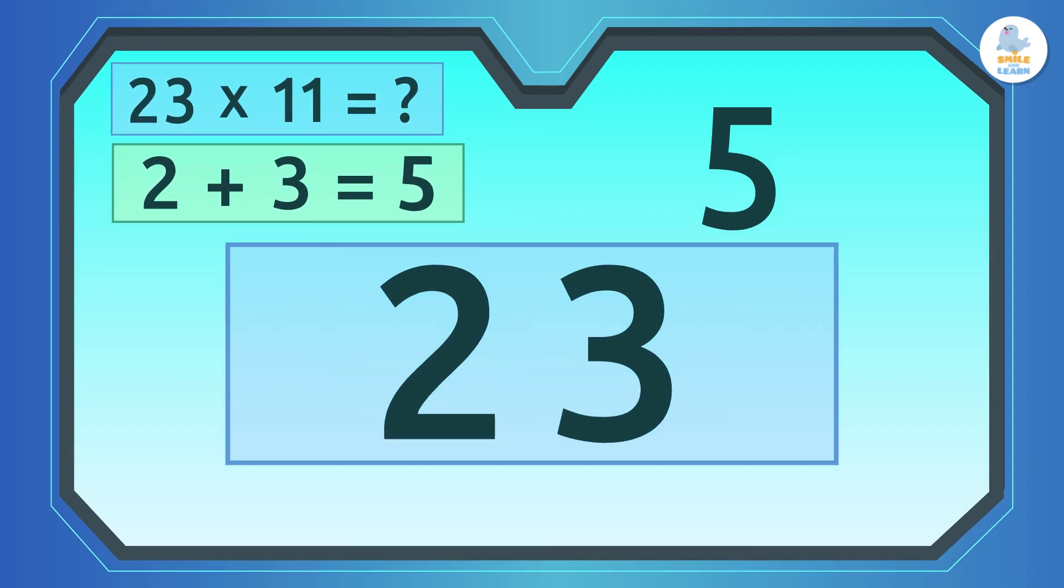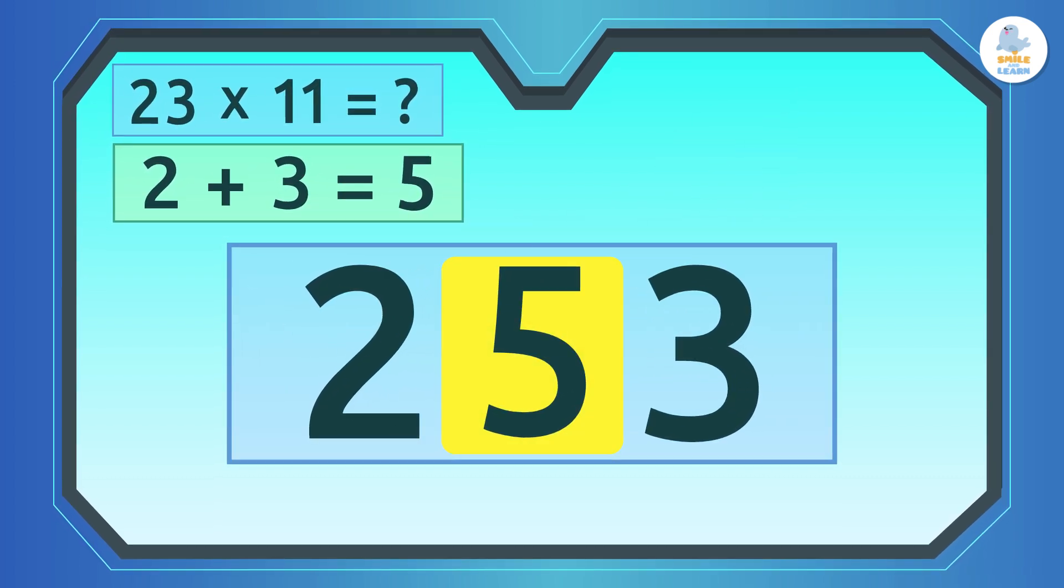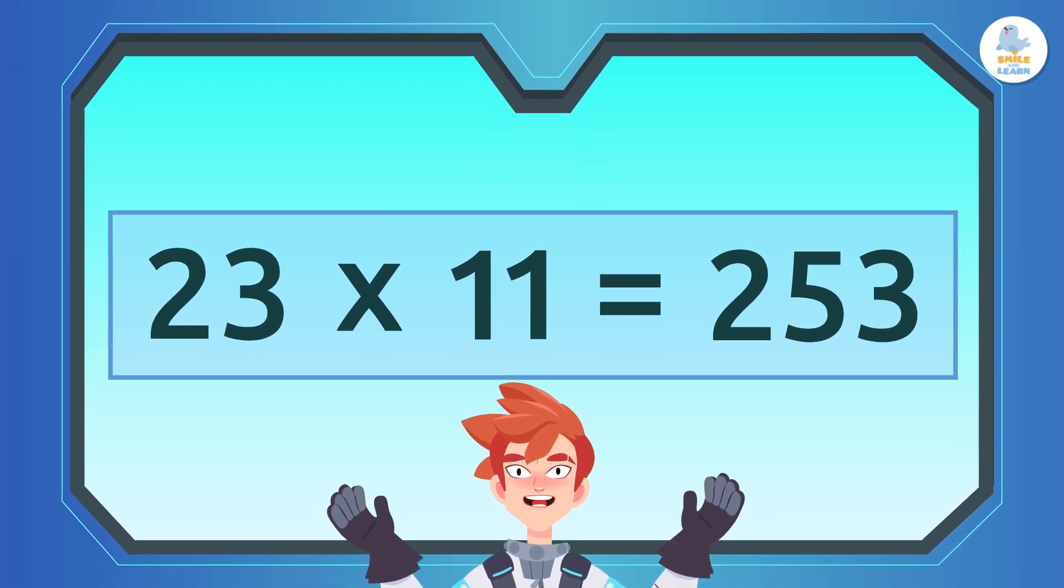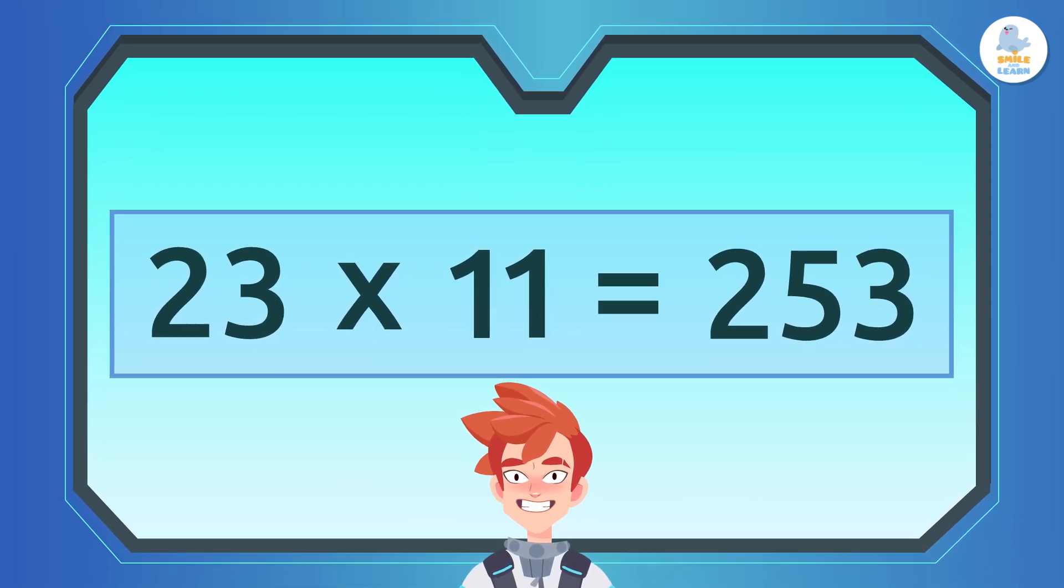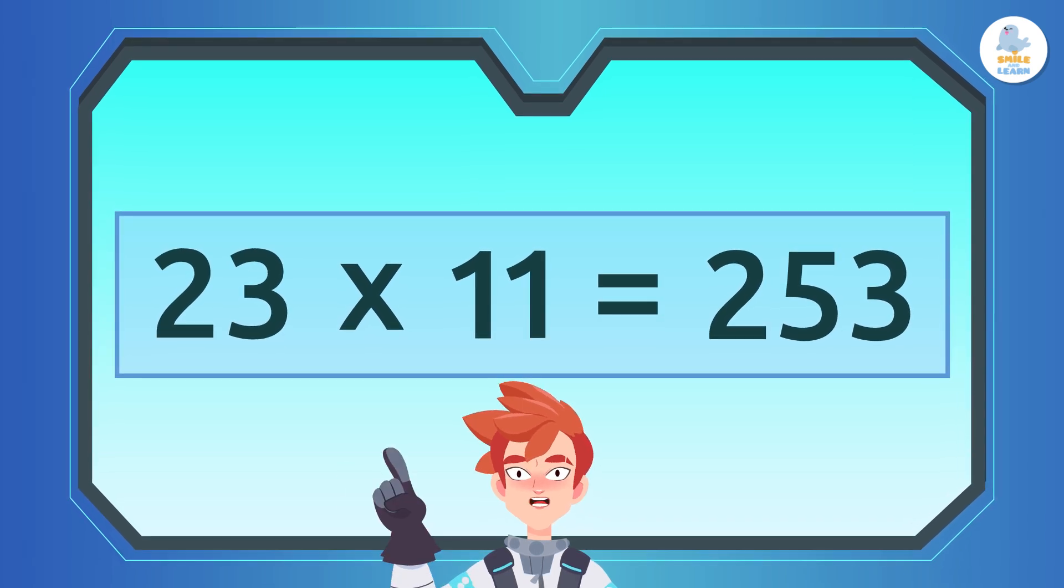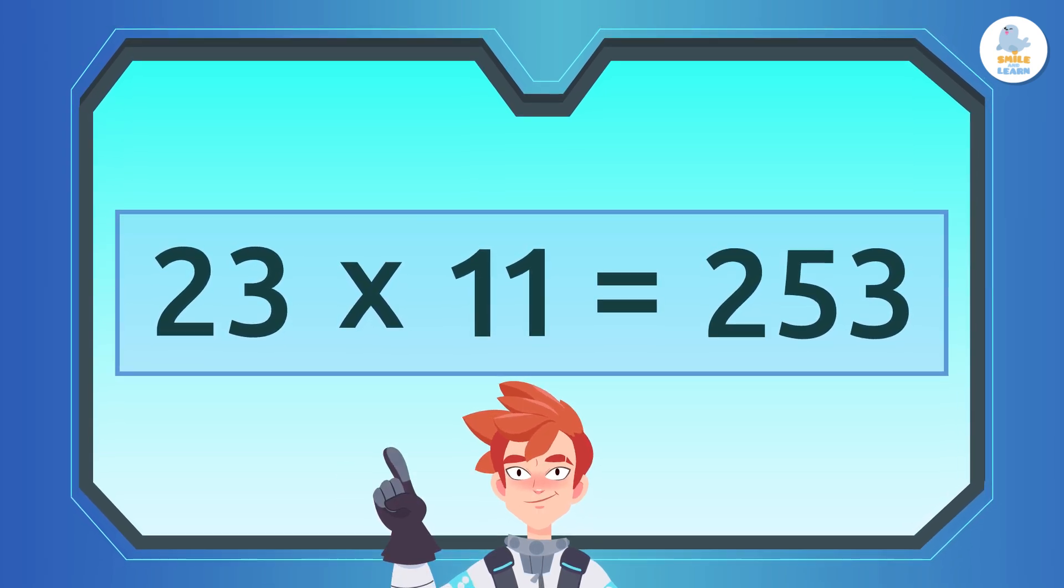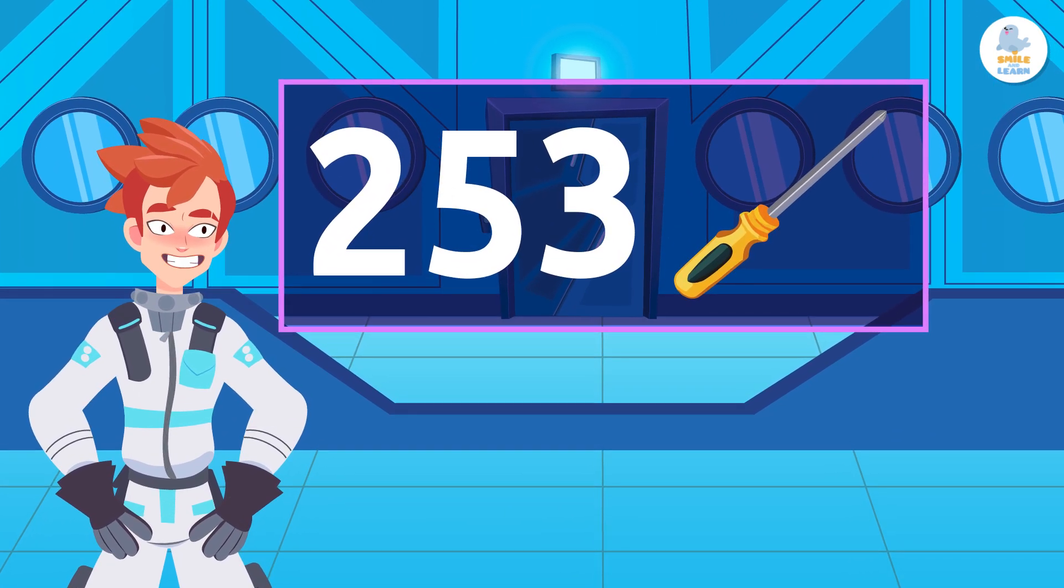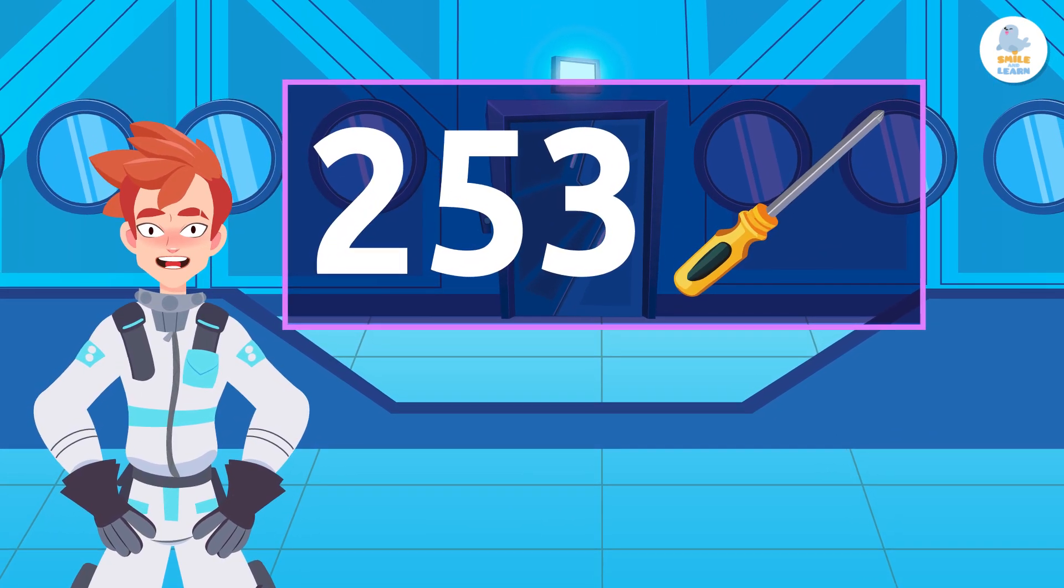Finally, we place that number between the two original digits and we have our answer. Can you believe it? So, 23 times 11 is 253. There are 253 screwdrivers on the space station. Easy, right?